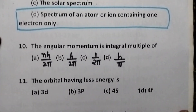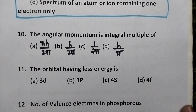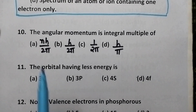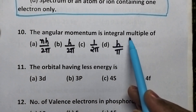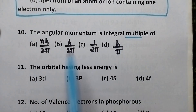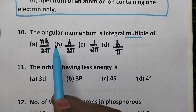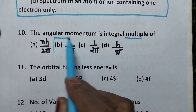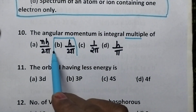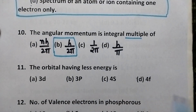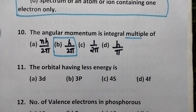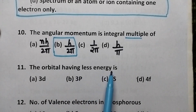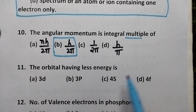The angular momentum is an integral multiple of — always angular momentum is an integral multiple of h over 2 pi. So option B is the right answer.